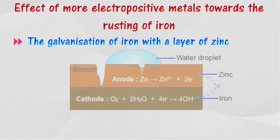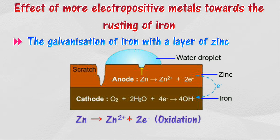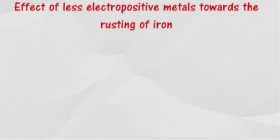Iron does not corrode if it is in contact with a more electropositive metal such as magnesium, aluminum, or zinc. For example, in the galvanization process, iron is coated with a layer of zinc. Since zinc is more electropositive than iron, zinc acts as the negative terminal and releases electrons. These electrons flow to the iron and prevent its rusting. Zinc is corroded, while electrons flow to iron and are gained by oxygen and water to form hydroxide ions at the cathode.